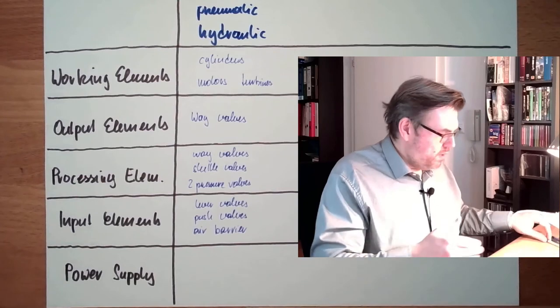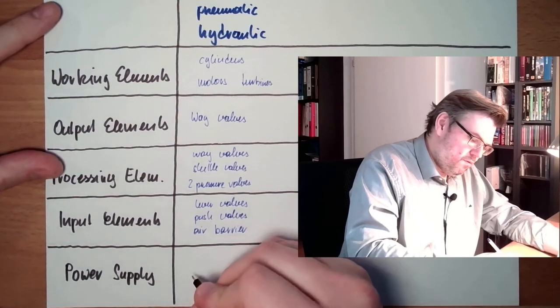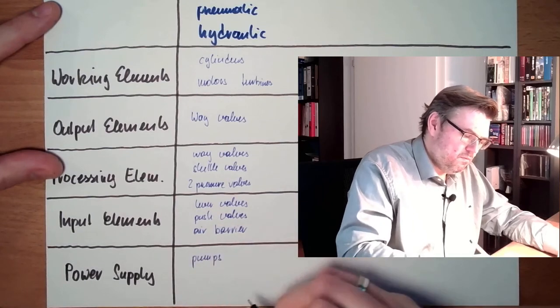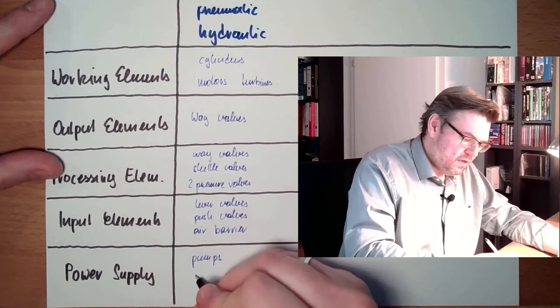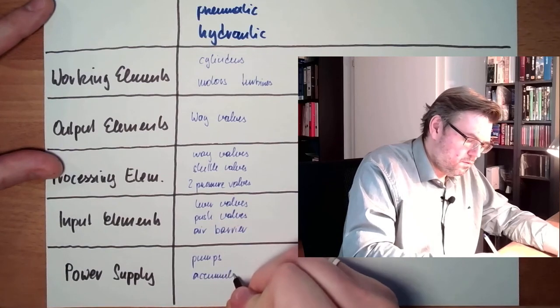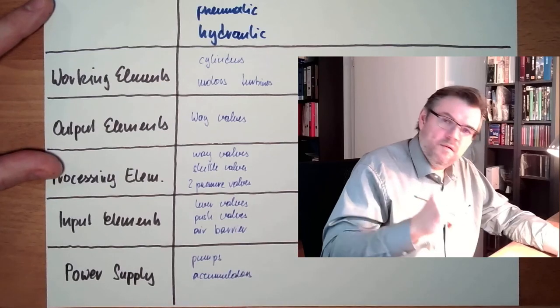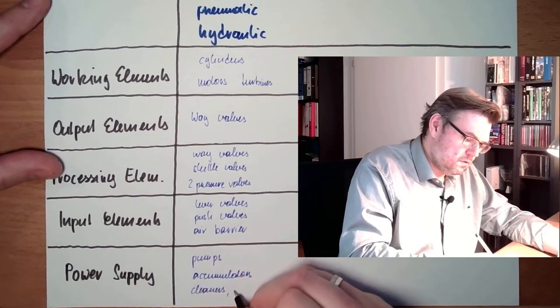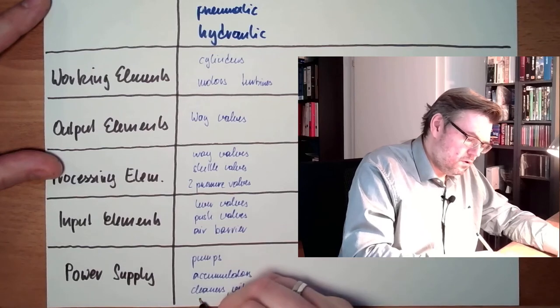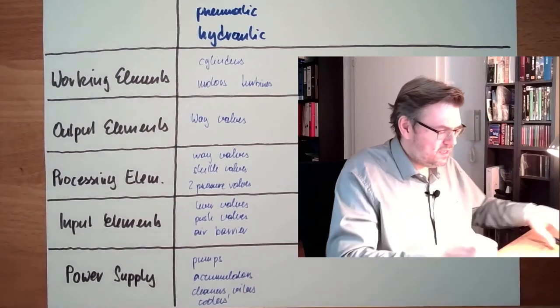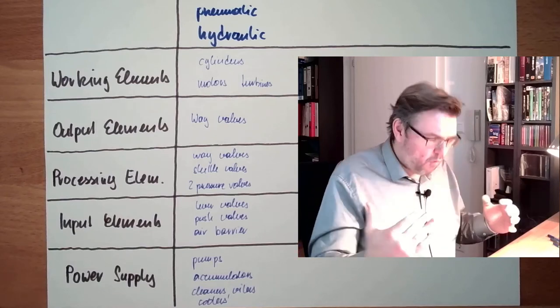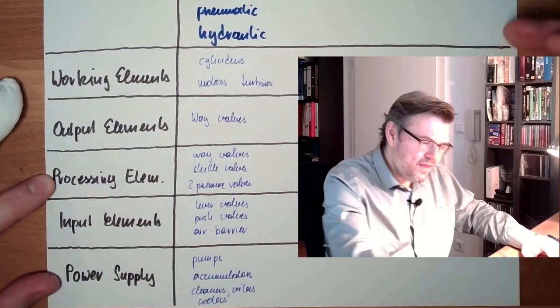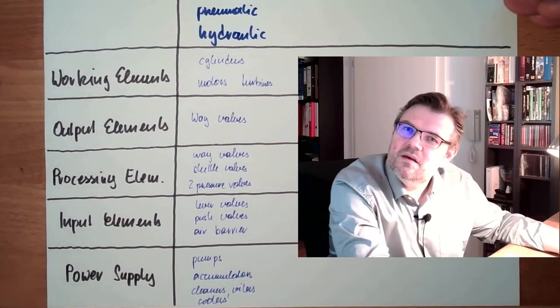Power supply, we have here pneumatic, we have pumps, hydraulic pumps, then also in power supply there is accumulators, then there is cleaners, oilers, coolers, everything which is necessary that we have power. These are the systems, or these are the things in a pneumatic or hydraulic control system.